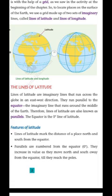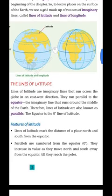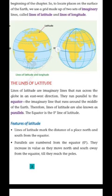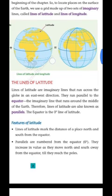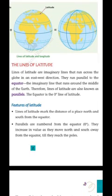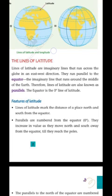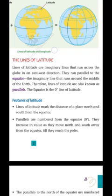Equator क्या है? Equator पृथ्वी का सबसे उभरा हुआ भाग होता है जो एक circle बना देता है। जैसा कि आपने क्रिकेट की ball में देखा होगा — उसमें एक सबसे उभरा हुआ भाग दिखाई पड़ेगा। Therefore, lines of latitude are also known as parallels. The equator is the zero degree line of latitude.